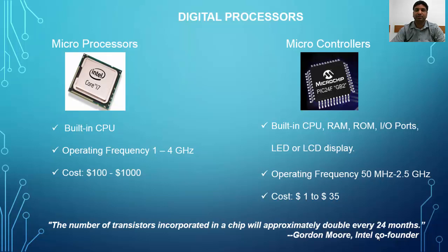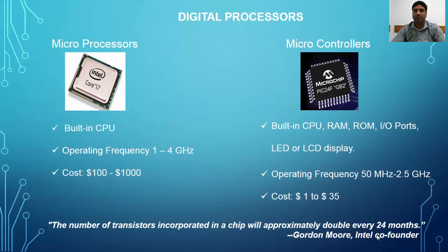Microprocessors are classified into microprocessors and microcontrollers. Both microprocessors and microcontrollers look alike, but there is a subtle difference between them. Microprocessors are general purpose central processing units while microcontrollers are specialized processing units. Microprocessors have a built-in CPU and operate at a frequency greater than one gigahertz, whereas microcontrollers have built-in CPU, RAM, ROM and I/O peripherals, all integrated on a single chip, and operate at a frequency less than microprocessors.